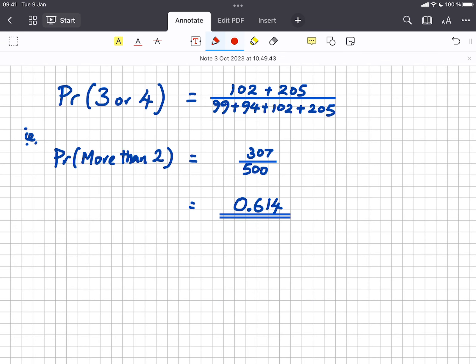So in my exercise book I've written the probability of a three or a four. Well, we observed a three 102 times and we observed a four 205 times, and that's out of all of the times we threw the thing, which was 99 plus 94 plus the 102 plus the 205. So that comes to 307 out of 500. So I've written that the probability of getting more than a two, i.e. a three or a four, is 307 out of 500, which as a decimal works out to 0.614.